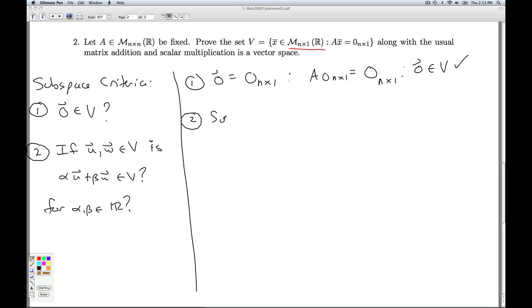Second condition, I'm going to suppose I have two guys in there and I have to show that the linear combination is also in there. Okay, so what does it mean for u to be in there? That means that u is some n by 1 matrix so that A times u is the 0 n by 1 matrix. And the same thing goes for w. So if I want to show that alpha u plus beta w is in V, I need to show that if I take A and multiply it by alpha u plus beta w, I get the 0 matrix. So let alpha and beta be real numbers.